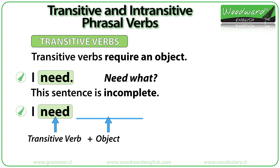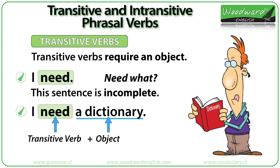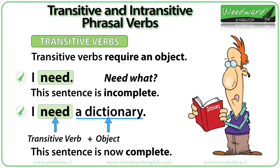Let's add the noun "dictionary." The sentence becomes: "I need a dictionary." Now the sentence is complete and we can understand it. We added the object "a dictionary" after the transitive verb.